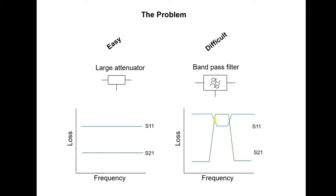Let's look at the challenge. We'll start by looking at a large value attenuator, shown here on the left. Relatively speaking, this is an easy measurement task, mainly because we assume that the match of the device, that is S11 and S22, are good. That makes all the difference.